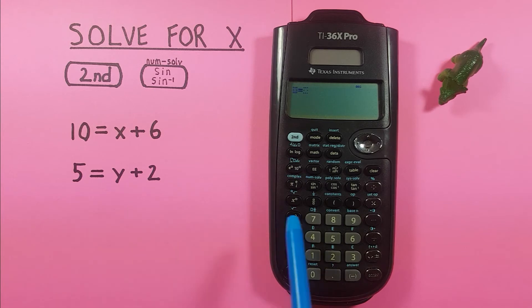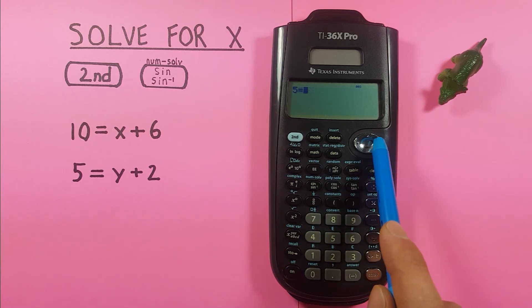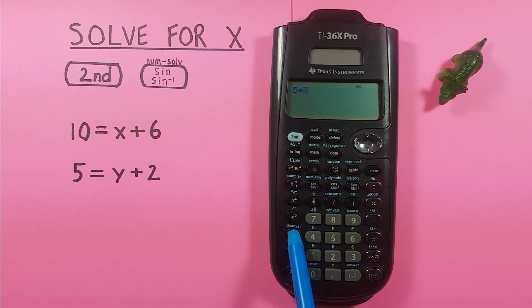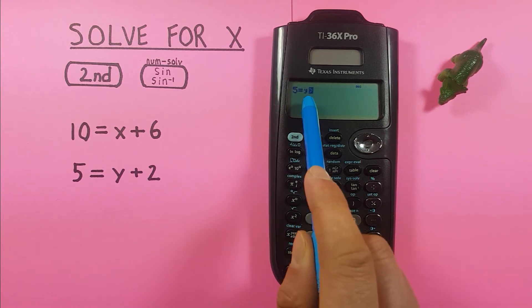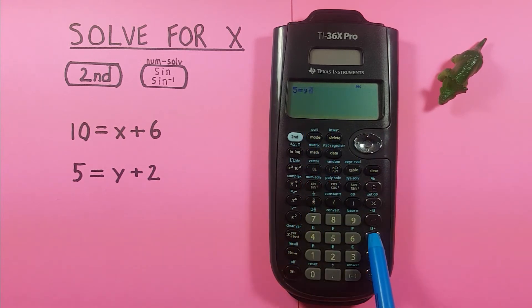So for this equation we have 5 is equal to y. So to get y we press the x key twice. There we go, y plus 2. Press enter.